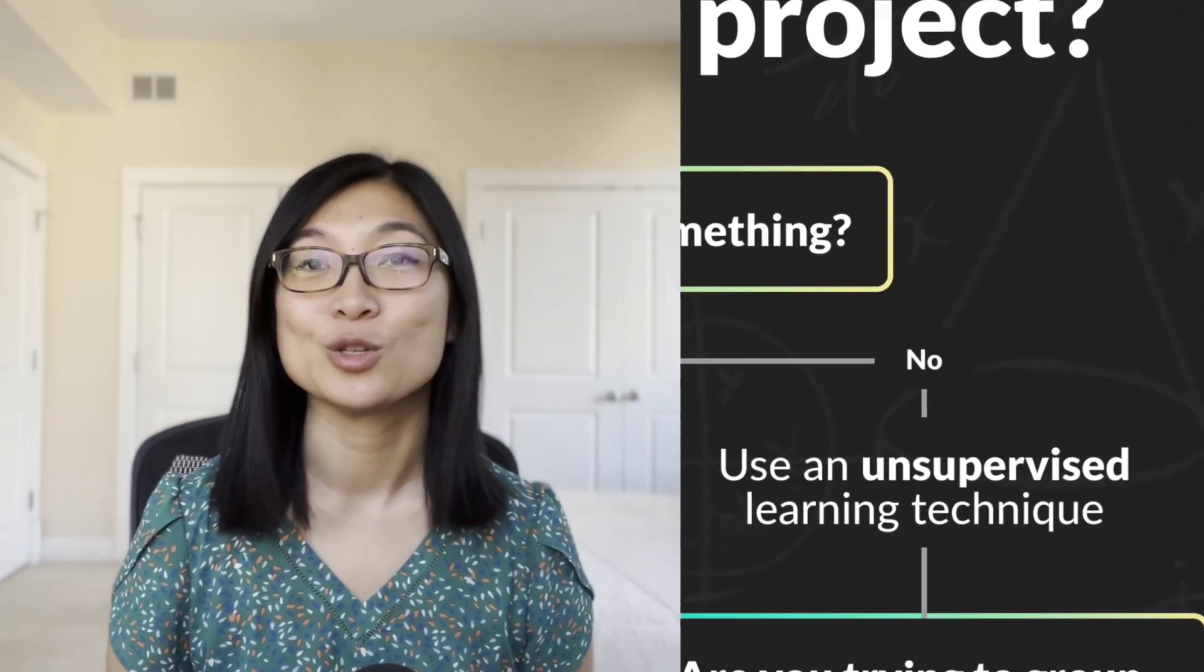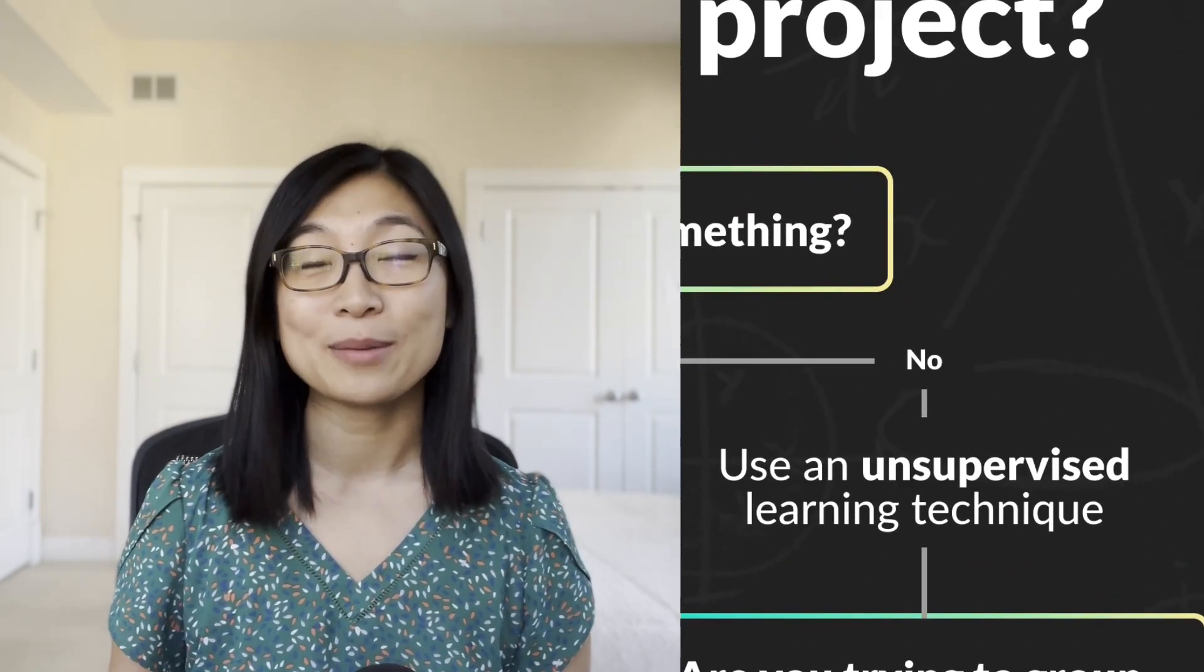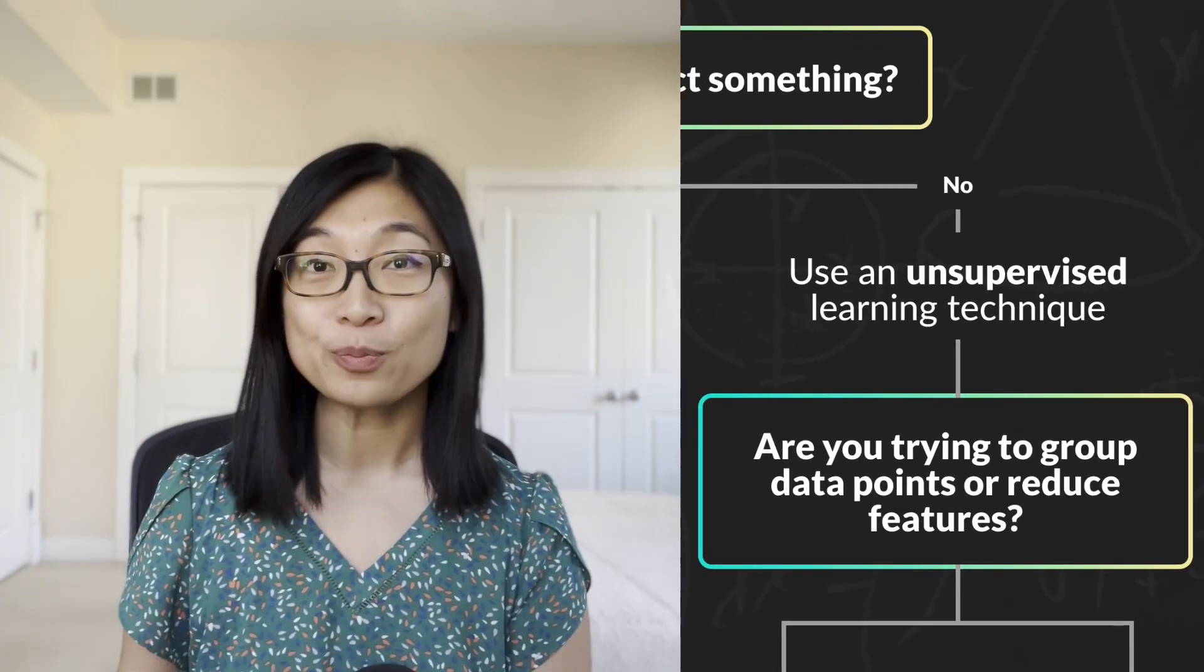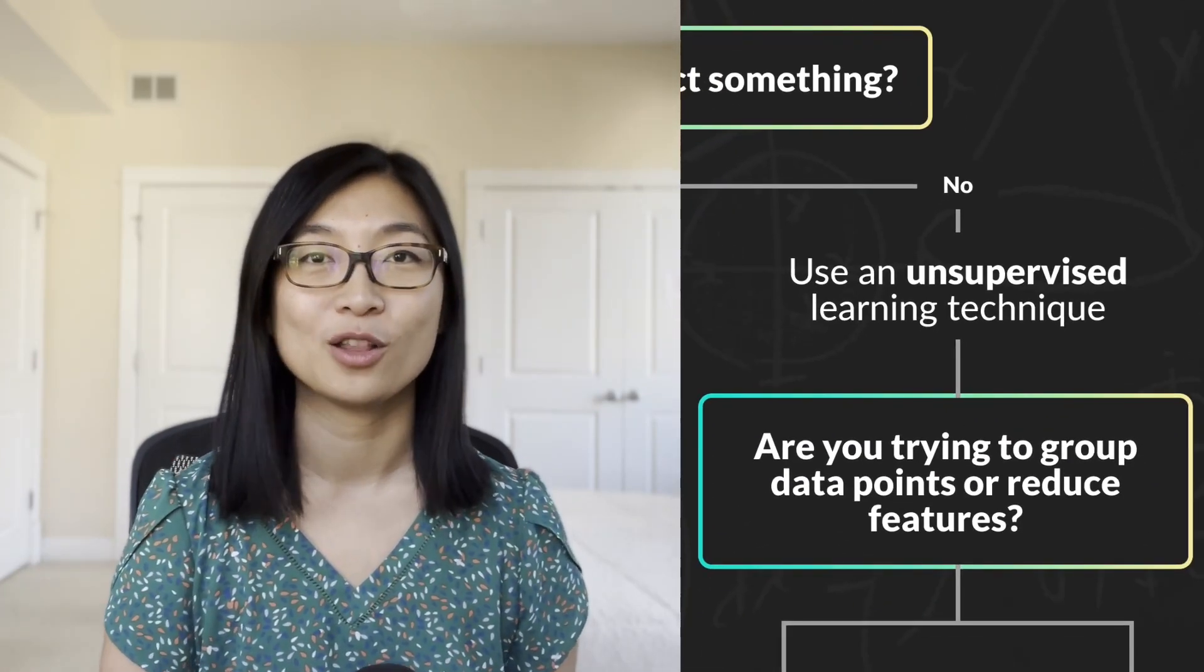Now let's move on to unsupervised learning. So if I'm working on a data science project and I don't want to predict anything, then I'm going to go with an unsupervised learning approach. So from here, I'm going to ask myself, am I trying to group things or am I trying to reduce features or reduce the number of columns?